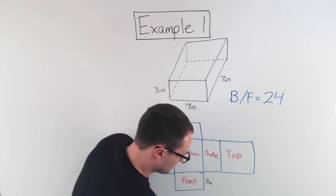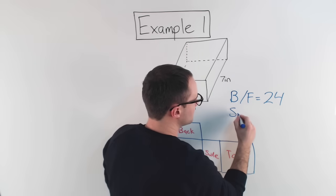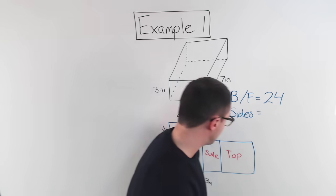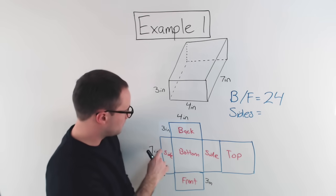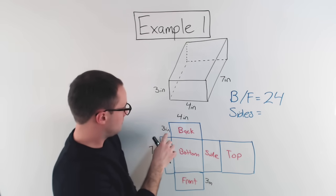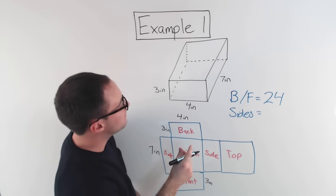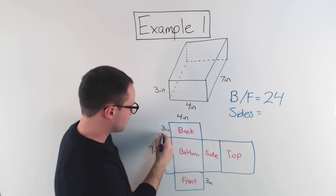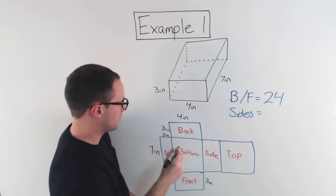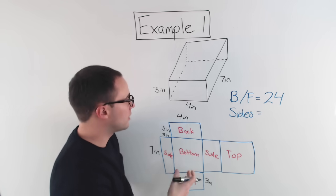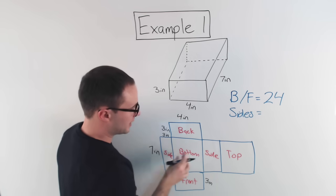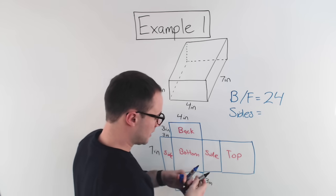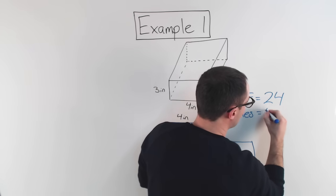For the two sides: three times seven is 21, times two because both sides are congruent, giving me 42.